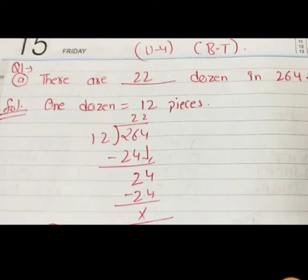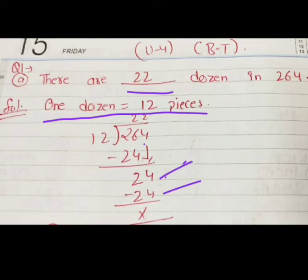So students, in question number 1, the question is saying that there are dash dozens in 264. We have to find how many dozens are in 264. Now, as one dozen means 12 pieces, so 264 means we have to divide 264 by 12. So 12 into 264, divide karenge, 24, divide karenge again 24, so our answer is 22. That is option number 2.